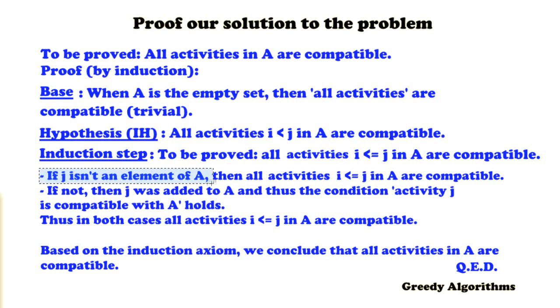If j isn't an element of A and if j is. In the first case, if j hasn't been added to A, then that means that all activities including j are compatible. Because you haven't added j to A, so A should still be compatible based on your hypothesis.